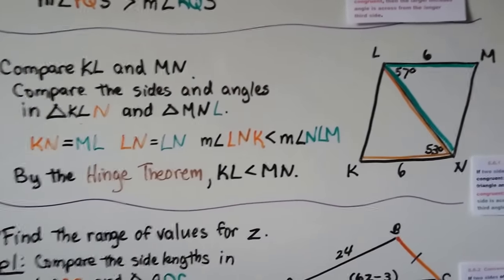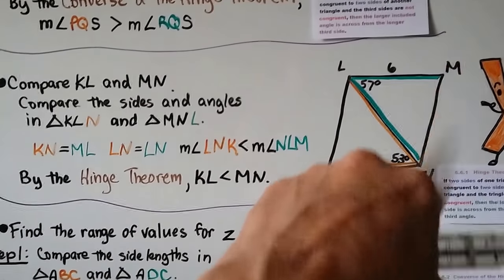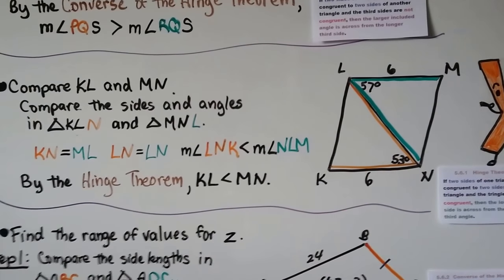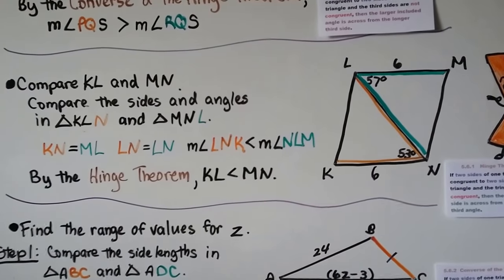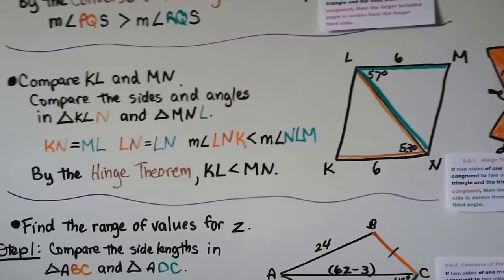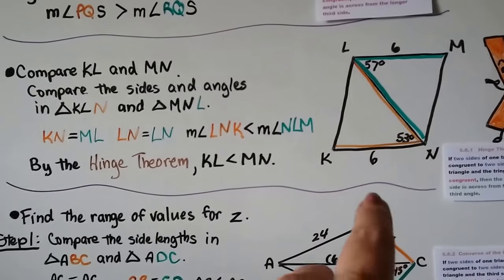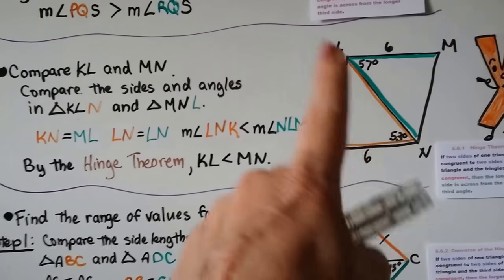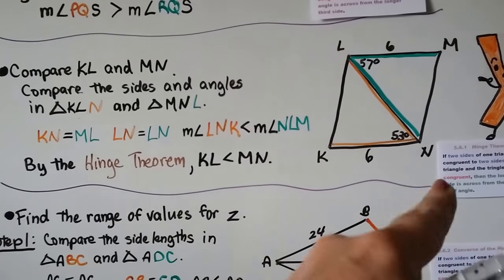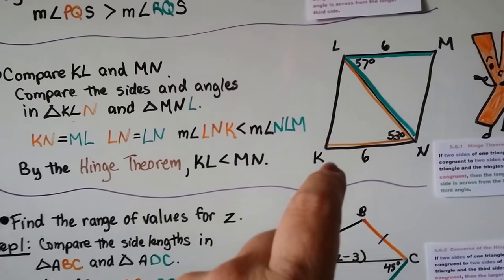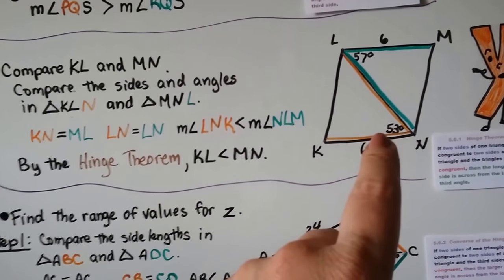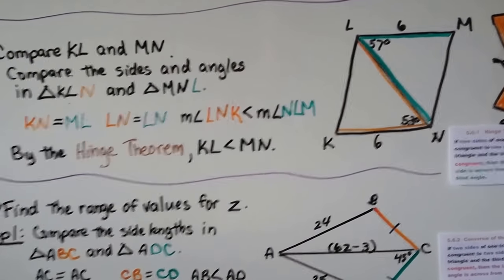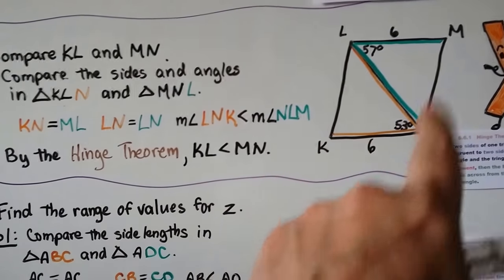Now let's compare KL and MN. Comparing the sides and angles — that's 57 degrees and that's 53 degrees. KN is 6, which equals ML at 6. LN equals LN by the Reflexive Property since they share it. The measure of angle LNK is 53 degrees, which is less than the measure of angle NLM, which is 57 degrees. So by the Hinge Theorem, KL is less than MN — the longer side is across from the larger angle.